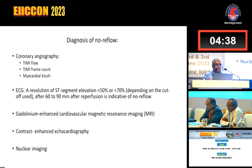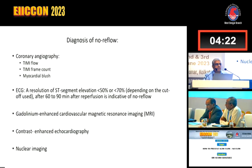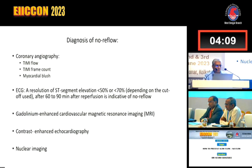Diagnosis is usually done from coronary angiography. When there is slow flow rather than no-reflow, you can note the TIMI flow, the frame count, or the myocardial blush. If a patient has been thrombolyzed and there is no ECG resolution, or resolution less than 50% within 60 to 90 minutes, that is indicative of no-reflow. Other diagnostic modalities include gadolinium contrast-enhanced cardiac MRI, contrast echo, or nuclear imaging.